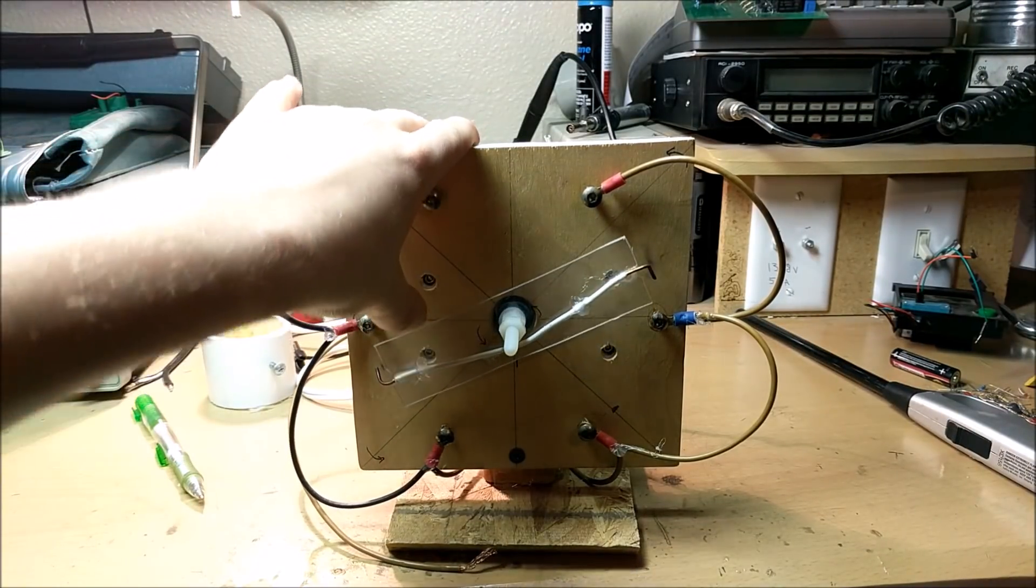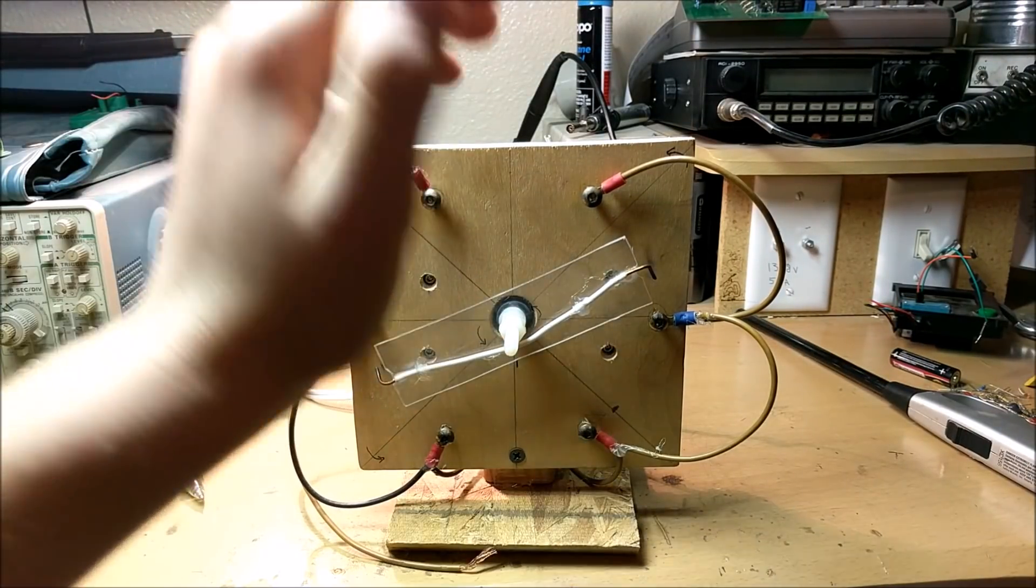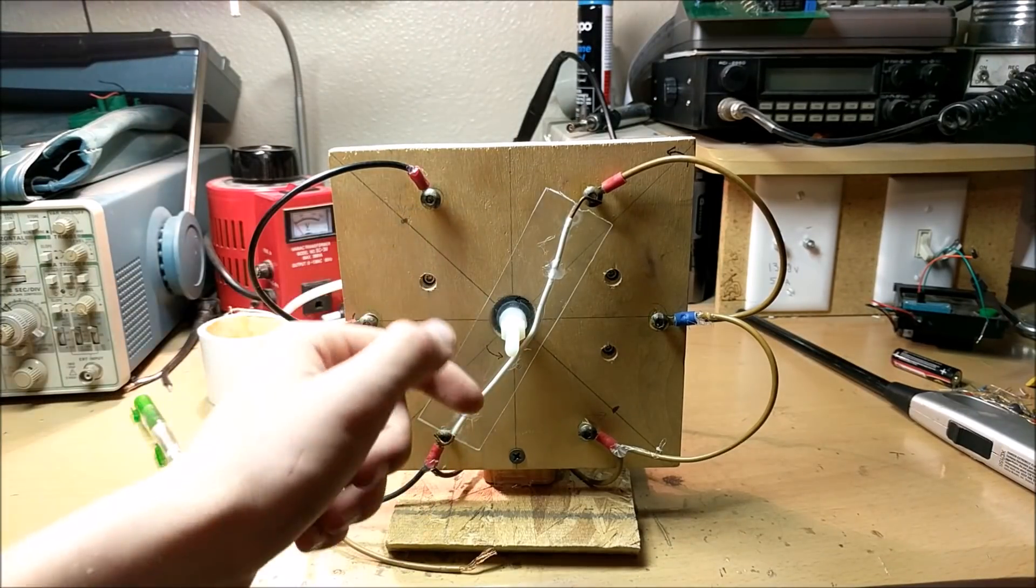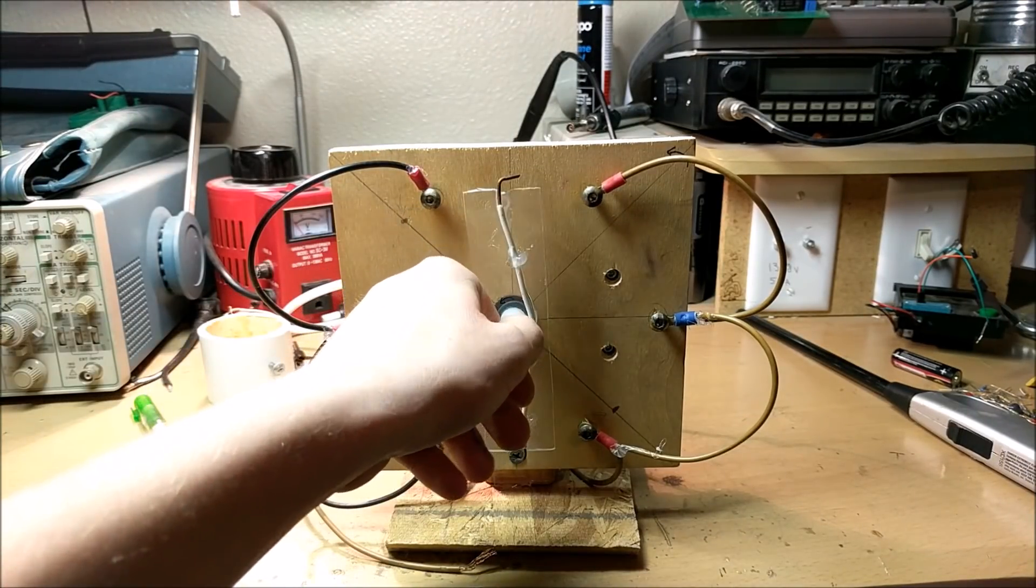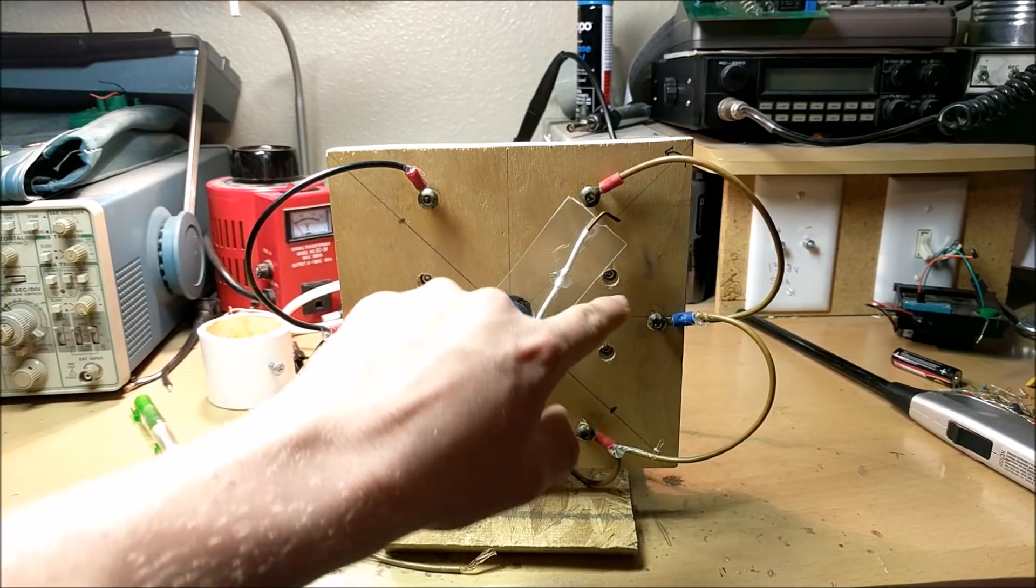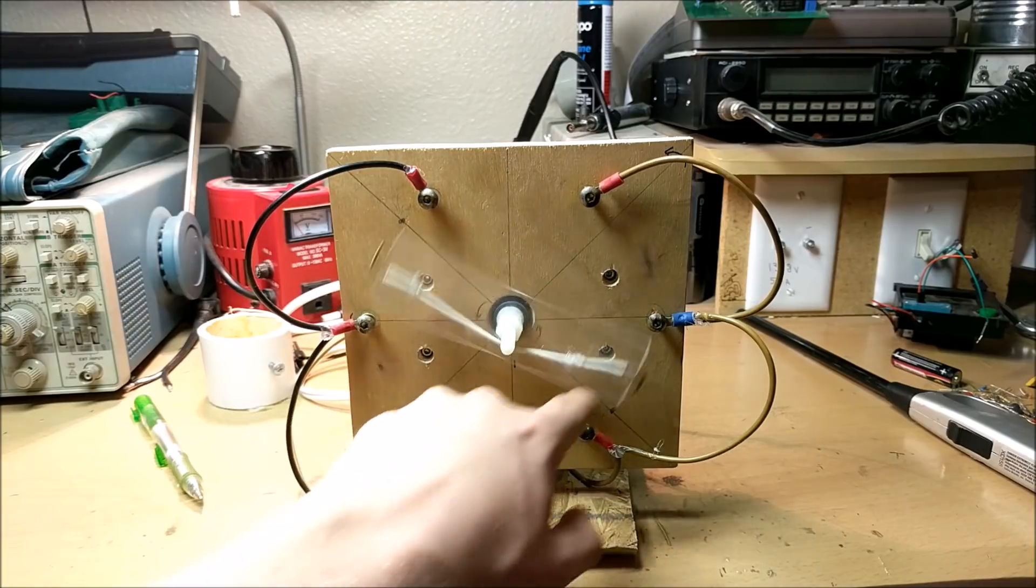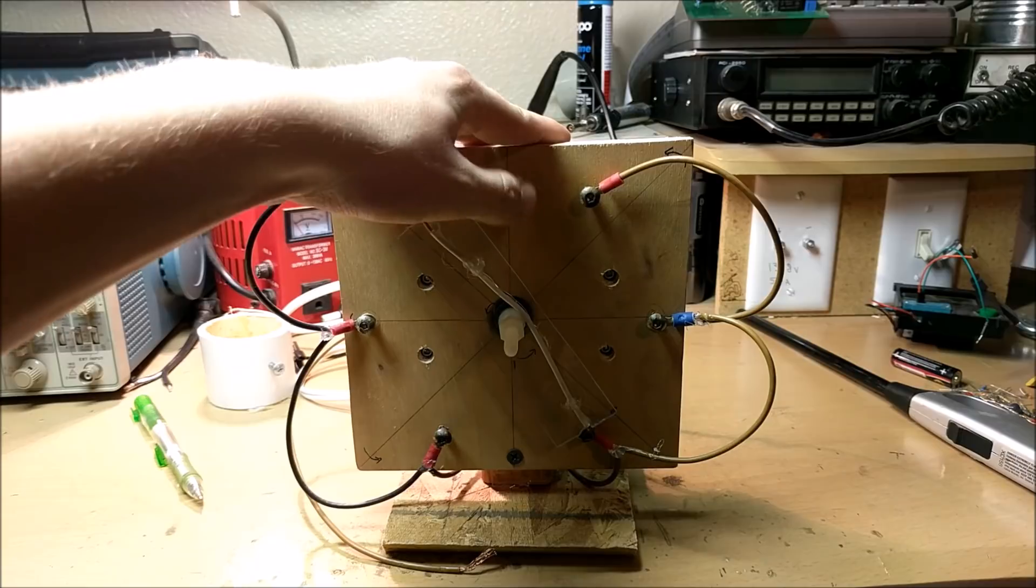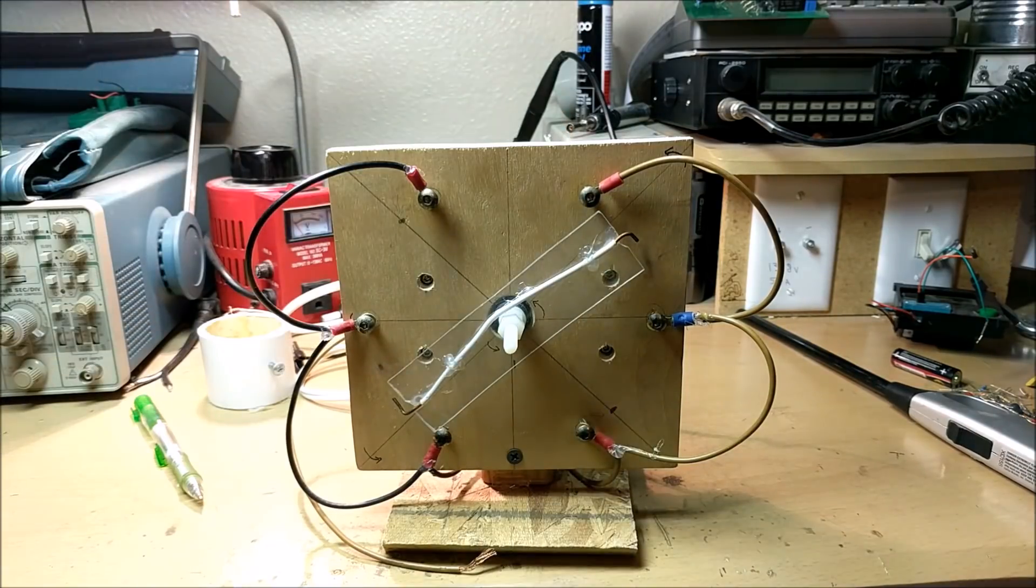Now, the cool thing about using a rotary spark gap is that there's almost no sparks. And now, you may think that's counterintuitive, but it's actually a better thing for your Tesla coil. Because there's no sparks, there's less energy being lost as heat and light in the sparks. And therefore, there's more energy going into your Tesla coil, and you're getting bigger sparks. And it's a lot better. So, let's take a look at the back and how this works.